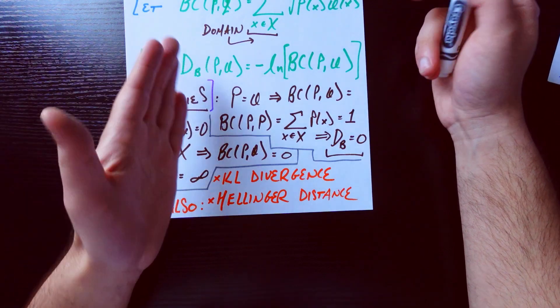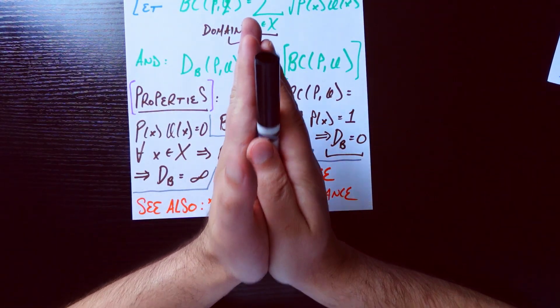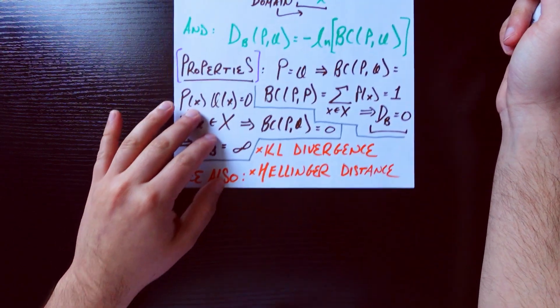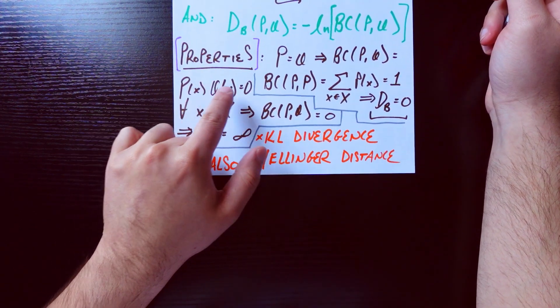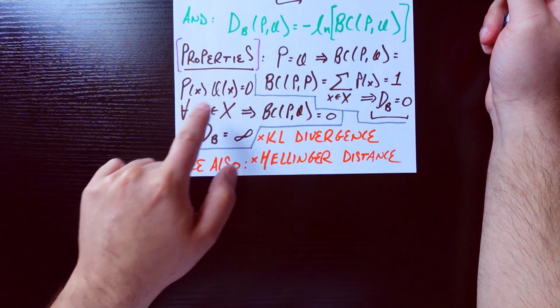Just like we would expect. We would expect that if you put the same distribution, you're asking for what's the difference between one distribution and itself. There should be zero distance between those two things.